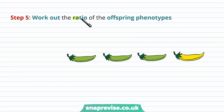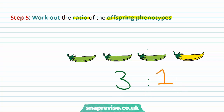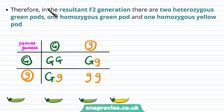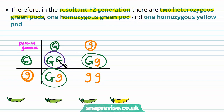You can now work out the ratio of the offspring phenotypes: three green to every one yellow pea pod — three green phenotypes to every yellow phenotype. In the resultant F2 generation, there are two heterozygous green pods, one homozygous green pod with both green alleles, and one homozygous yellow pod with two copies of that recessive allele.